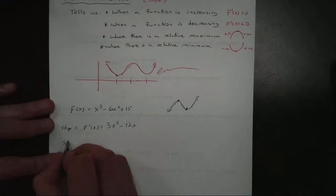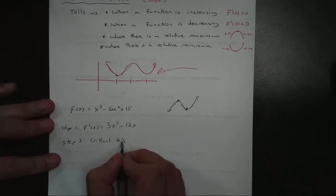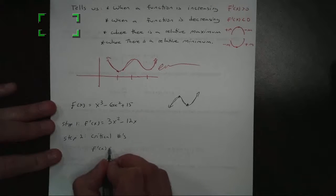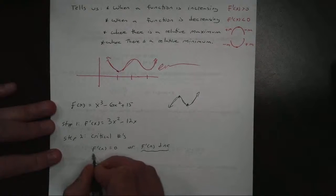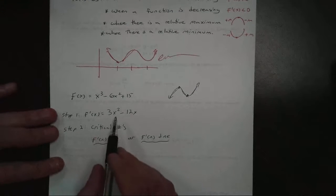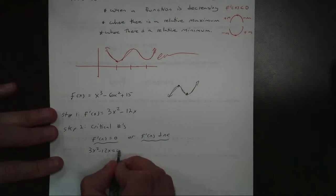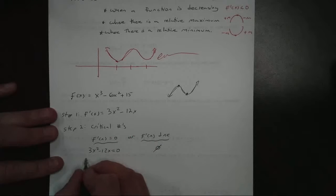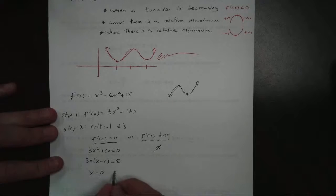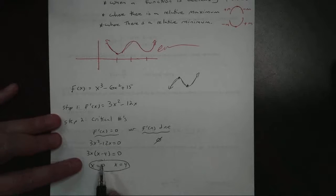And then step two, you have to find the critical numbers. Now we discussed earlier how to get critical numbers. That's where the derivative is equal to zero, or where the derivative itself does not exist. So if we set the derivative equal to zero, 3x squared minus 12x, set that equal to zero. And we know it's never going to not exist because we're not dividing by anything. Here I can factor out a 3 and x. I get x minus 4 equals zero. So I get x equals zero, x equals four.